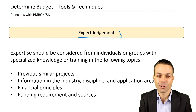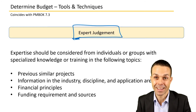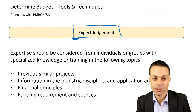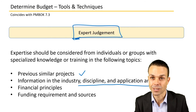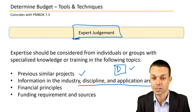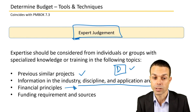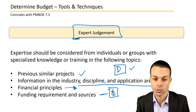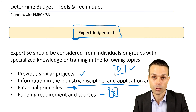For tools and techniques, expert judgment is always a favorite — as project managers we need to gather expert judgment from people in their areas of expertise. Expertise should be considered from individuals or groups with specialized knowledge in similar projects, the discipline or application area, the deliverables themselves, and financial principles such as currency fluctuations or hedges. We may also need expertise on funding requirements and sources — where the money is coming from and what process we need to follow to gather funding.